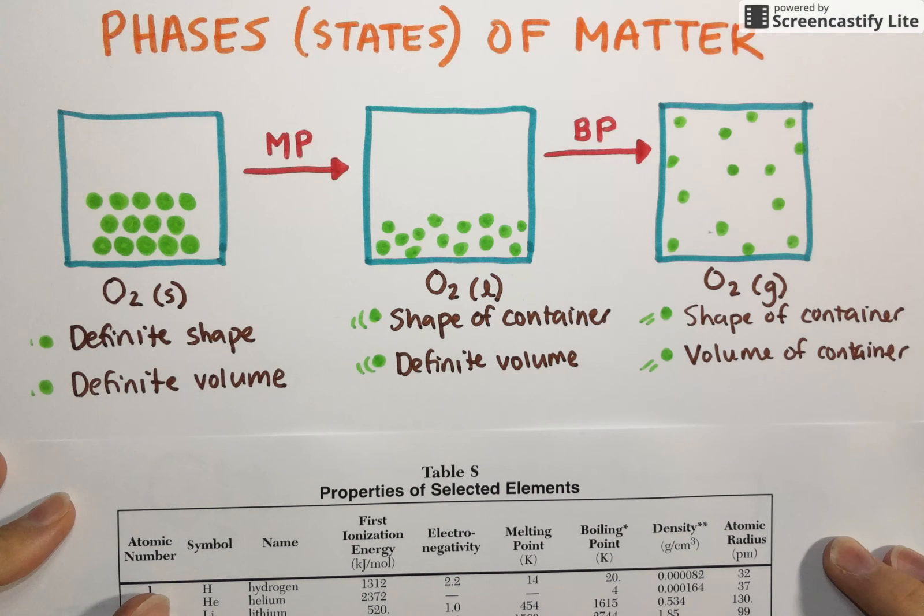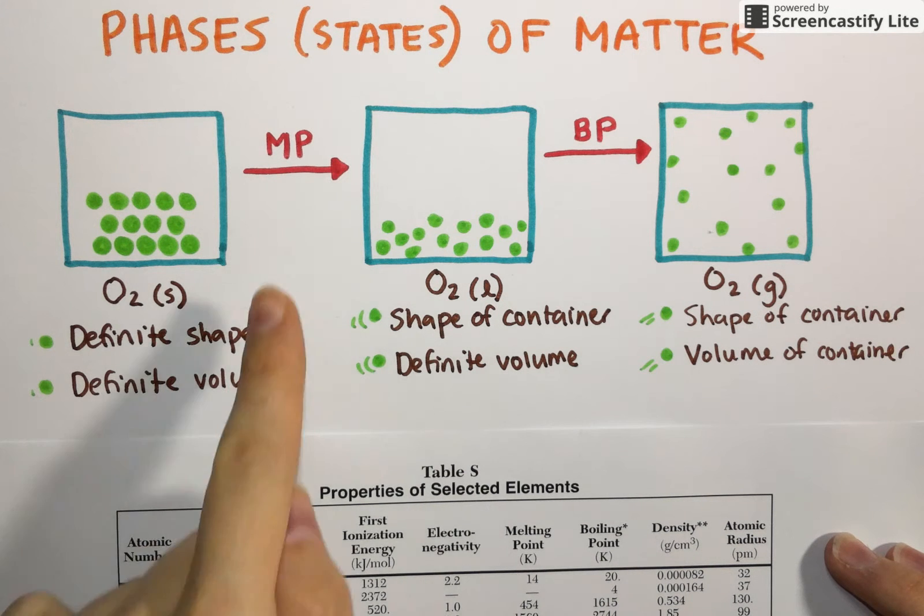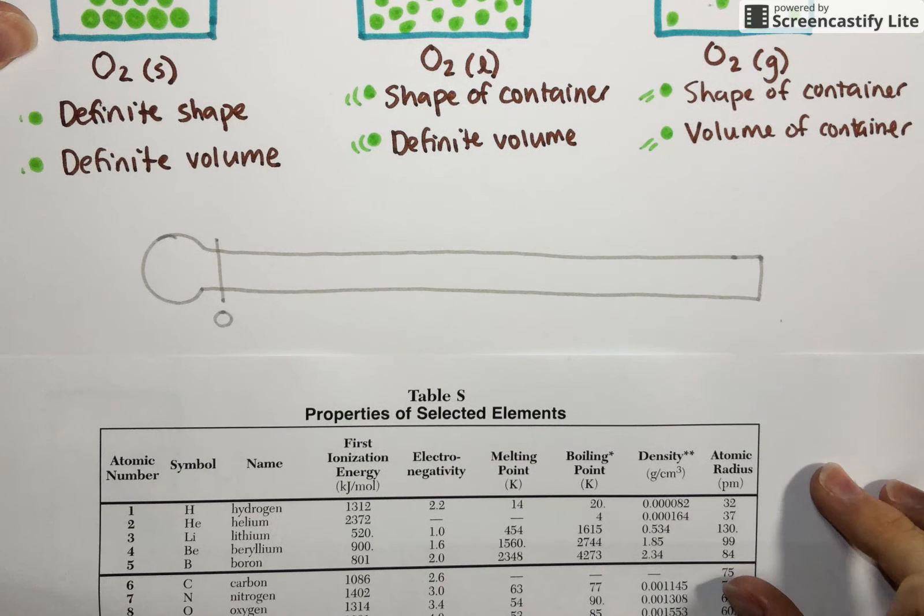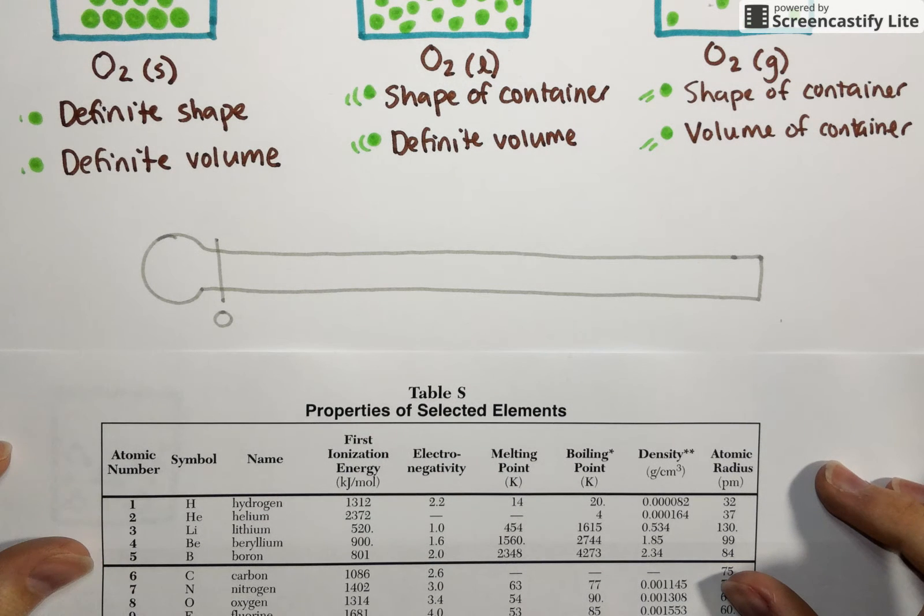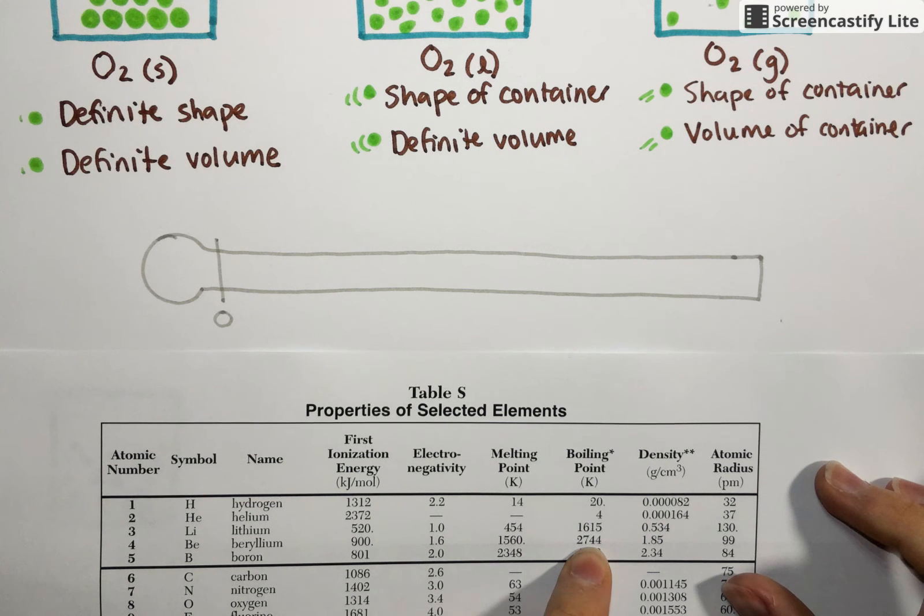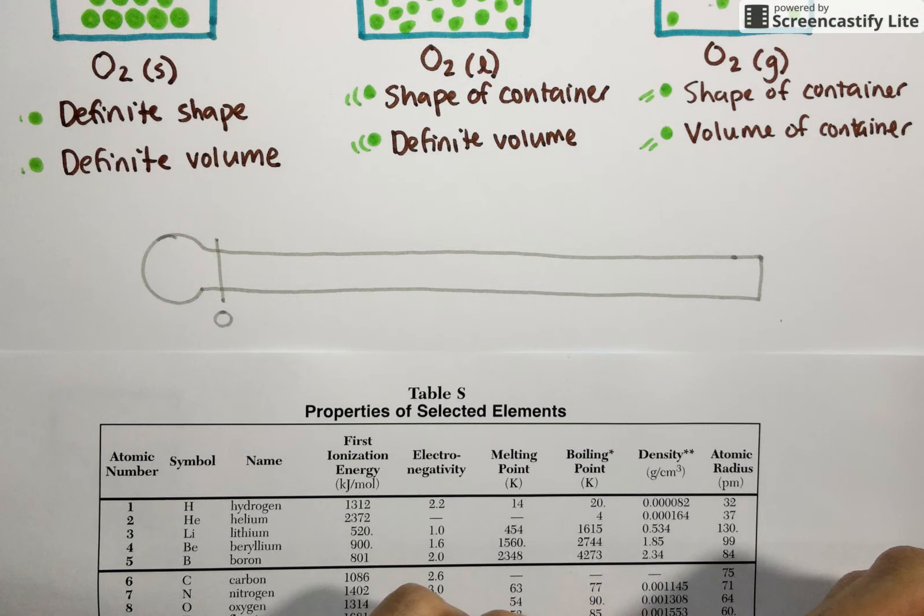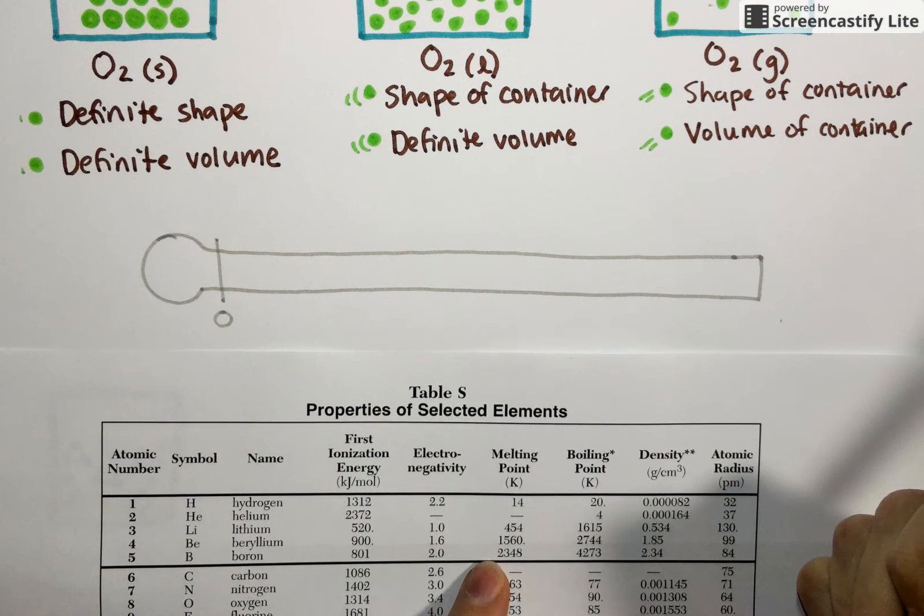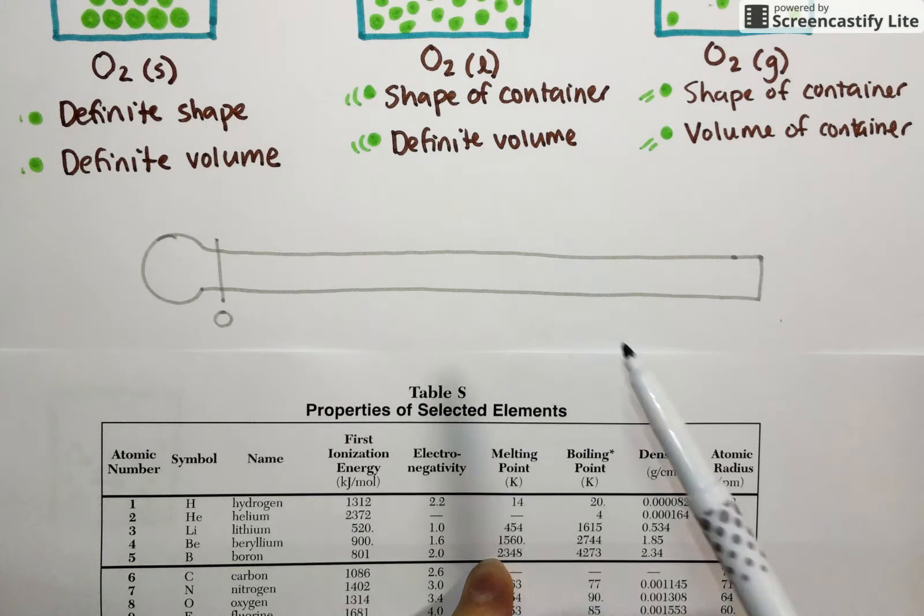So if you're ever asked to predict what phase or state of matter a particular element is in at a certain temperature, you're going to be looking at Table S and paying attention to these melting and boiling points. We can use a different element as an example. Let's take boron. Boron has an extremely high melting point and even higher boiling point. If I wanted to know what state of matter boron existed in at room temperature or standard conditions, we're going to look at where that temperature falls on boron's temperature scale.